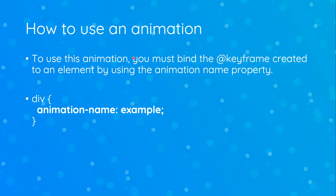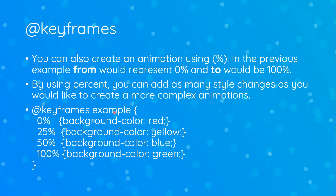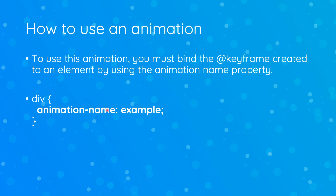To use an animation, you need to bind the keyframe you created to the actual element using the animation-name property. As you can see, we have a div and we're declaring the animation-name property, setting it equal to the actual animation name we gave in the keyframes. That's how you bind your keyframe to the element by declaring it at the animation-name.